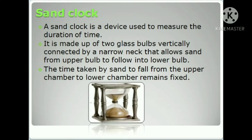The sand clock is made up of two glass bulbs vertically connected by a narrow neck that allows sand from the upper bulb to flow into the lower bulb. The time taken by the sand to fall from the upper chamber to the lower chamber remains fixed, and in this way they can measure time.